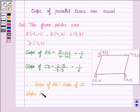Now, slope of BC is given by (3 - 0)/(3 - 4), and this is equal to -3.